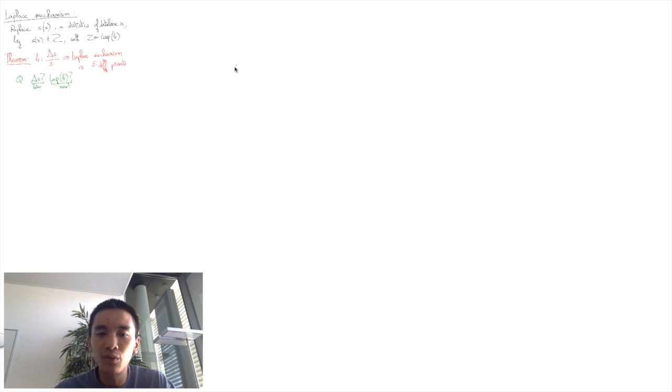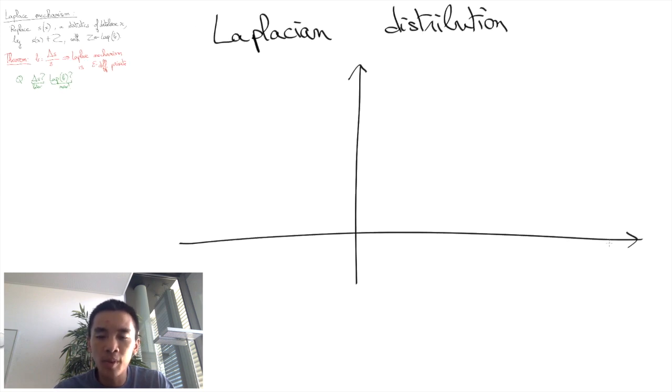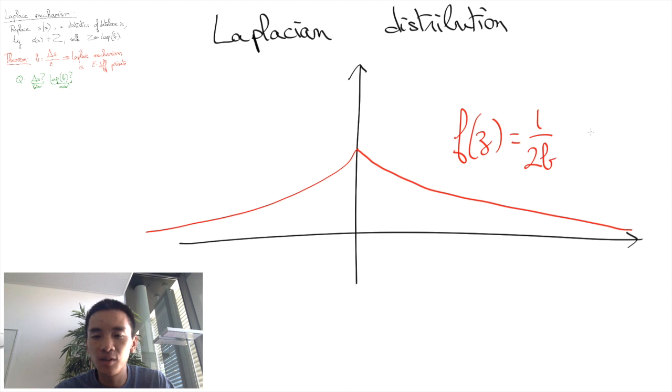This noise is a random variable whose probability density function looks like this. The formal equation of this curve is F of Z equals 1 divided by 2B times the exponential of minus absolute value of Z divided by B. In other words, this curve decreases exponentially both on the left and on the right, and if you only had one part of it, it would have been the exponential law.